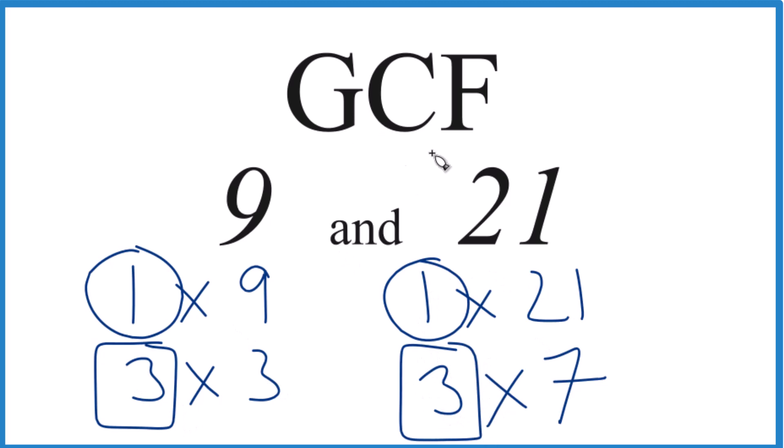So three is the greatest number. Three's the greatest common factor for nine and 21.